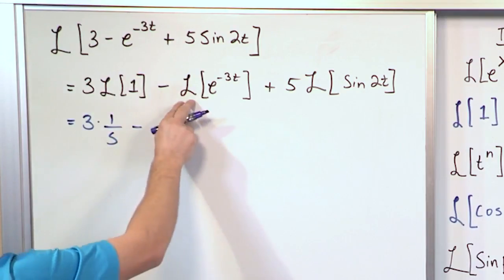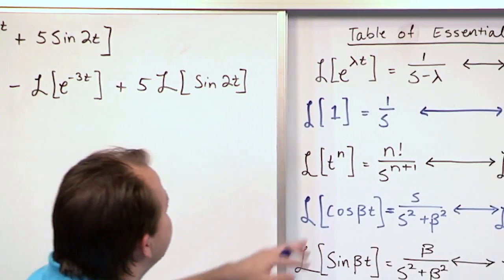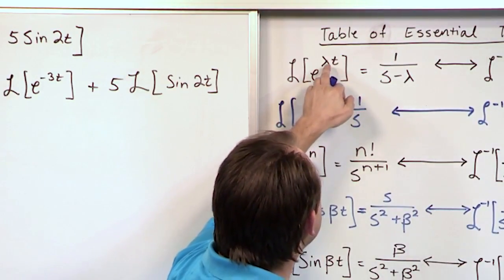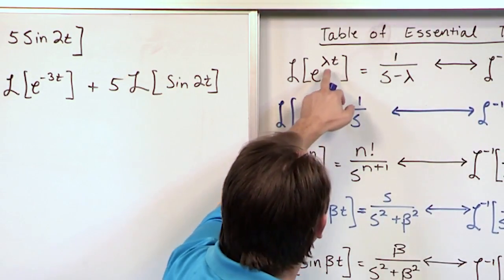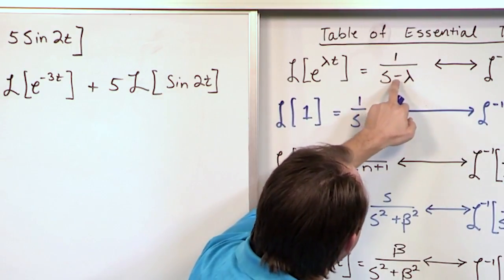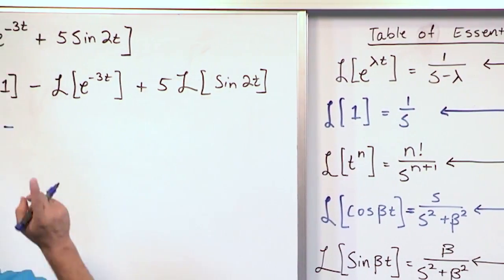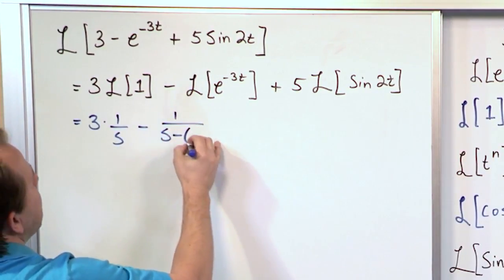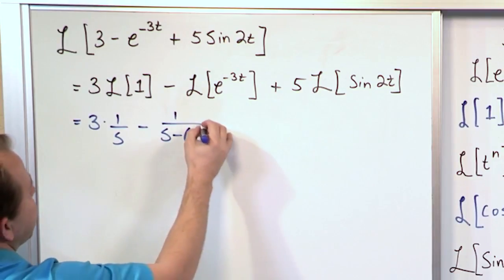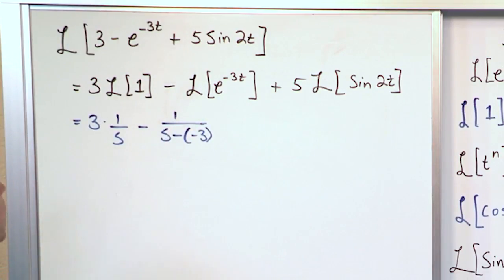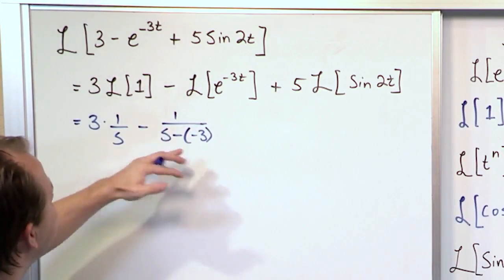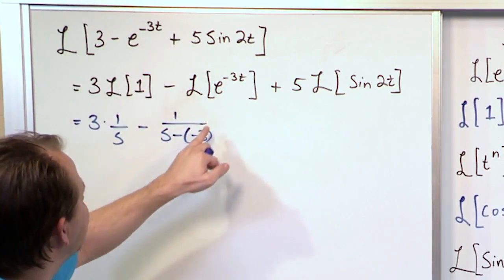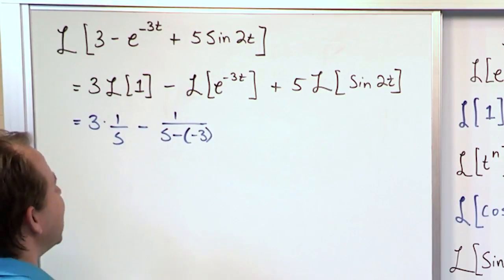We have a minus sign. Laplace Transform e to the minus 3t fits with this mold but the only difference is lambda at the top is negative 3. So when you use it down here it's s minus negative 3. My advice is the way you should write that is s minus negative 3. I know that you all know that this is positive 3, but if you put a plus here then going back and checking your work you're not going to know what you did. This way it's s minus whatever was in the exponent.